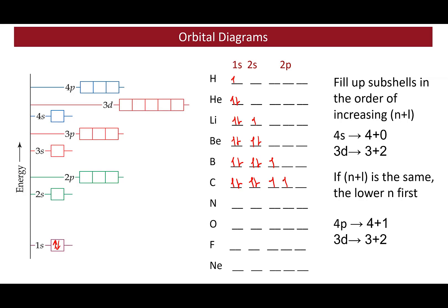That choice is determined by Hund's rule: unpaired electrons have lower energy, so the sixth electron in carbon goes into a second separate p orbital. For nitrogen (7 electrons): 2 in 1s, 2 in 2s, and 3 unpaired electrons each in separate 2p orbitals. For oxygen (8 electrons): 2 in 1s, 2 in 2s, and 4 in 2p — three go in unpaired first, and the fourth must pair up. Fluorine (9) and neon (10) complete the pattern, with neon having all orbitals in energy levels 1 and 2 completely filled.